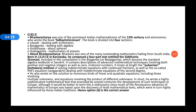Bhaskaracharya was one of the many outstanding mathematicians hailing from south India, born in 1114 CE in Karnataka. He composed a four-part text entitled Siddhanta Shiromani. This includes the compilation of Bija Ganita, which became a standard algebra textbook in Sanskrit, and it contains descriptions of advanced mathematical techniques.